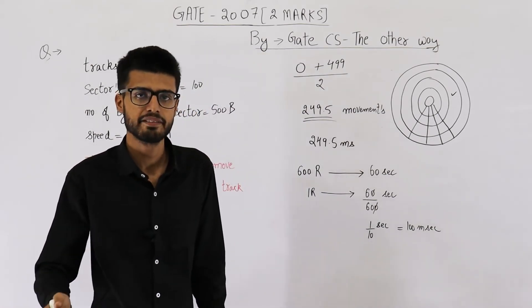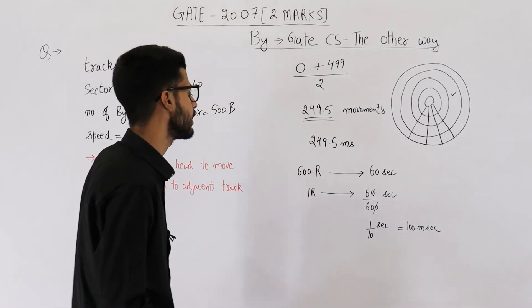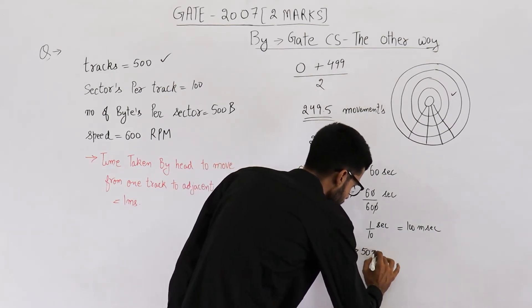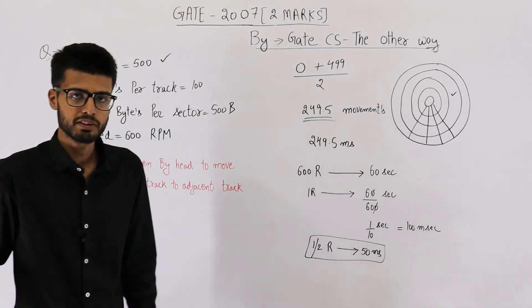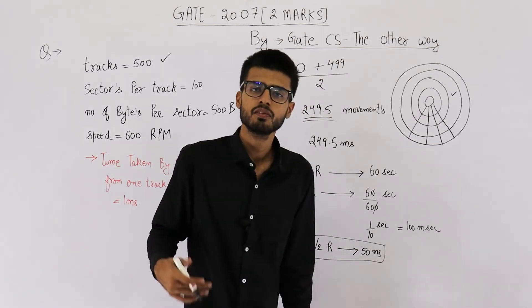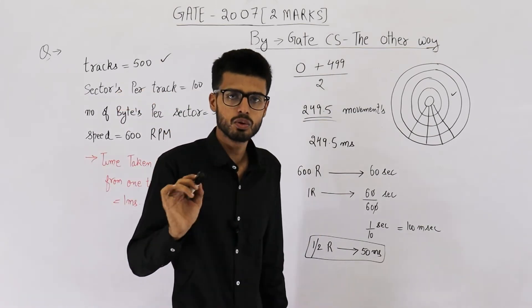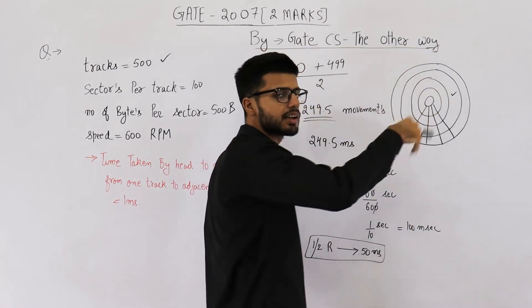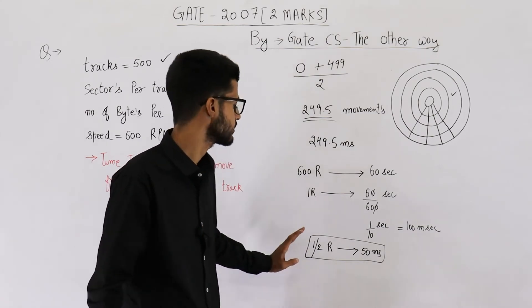So one rotation requires 100 milliseconds. Let's find out the average rotational delay. Average rotational delay as you know is for half rotation. Half rotation will require 50 milliseconds, because full rotation requires 100 milliseconds. So half rotation will require 100 by 2 which is 50 milliseconds. Why are we considering for half rotation only? Because this will be the average case. In some cases, you might require no rotation at all. In some cases, you might need to rotate the entire platter once. So average case will be no rotation plus 1 rotation divided by 2 which is half rotation.